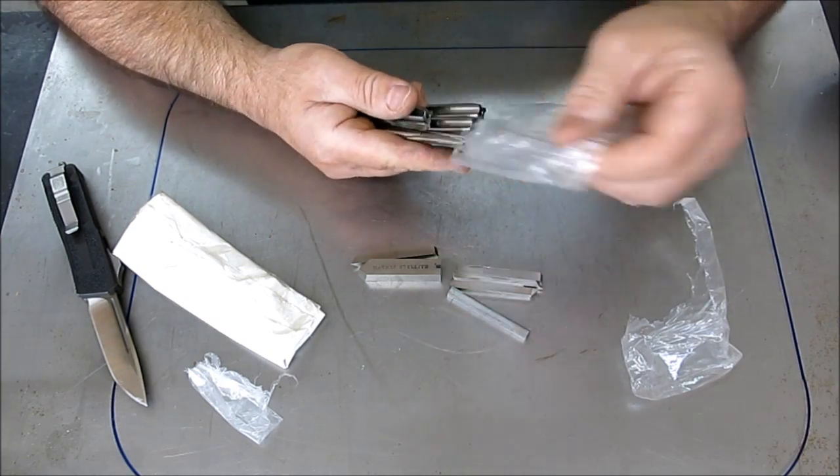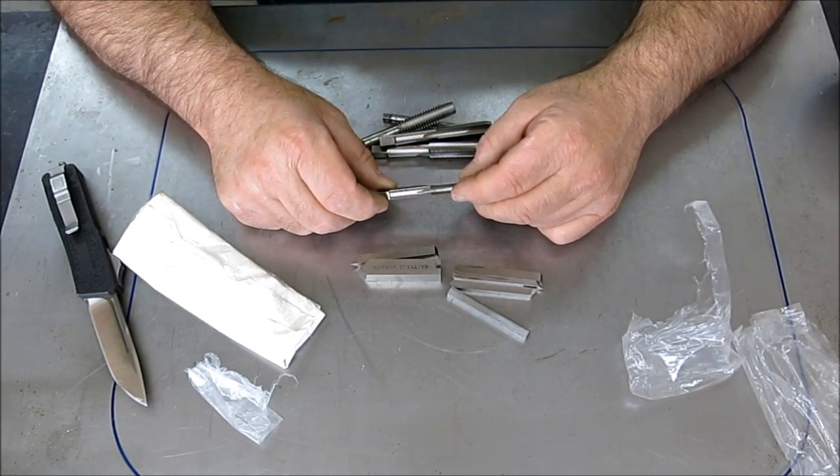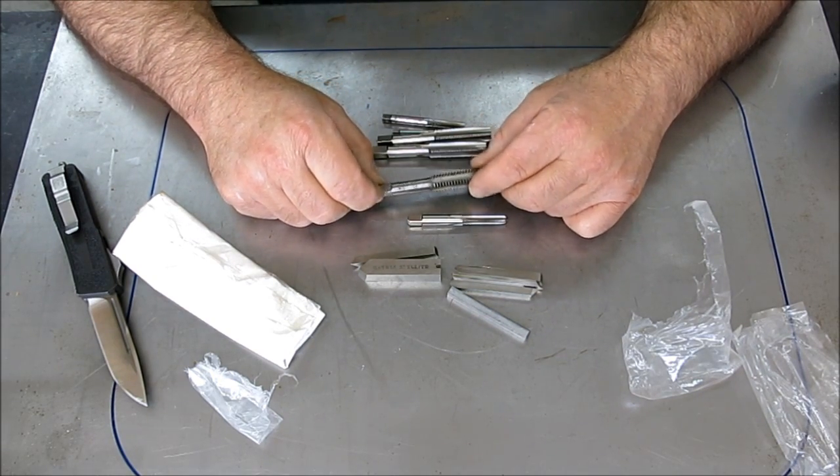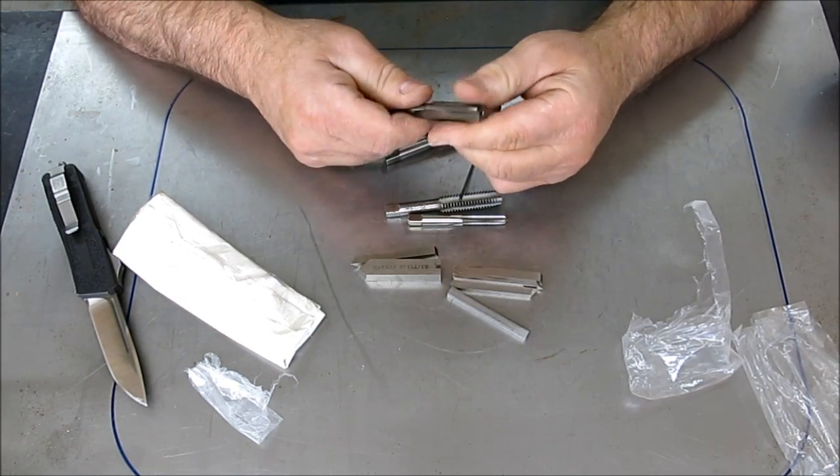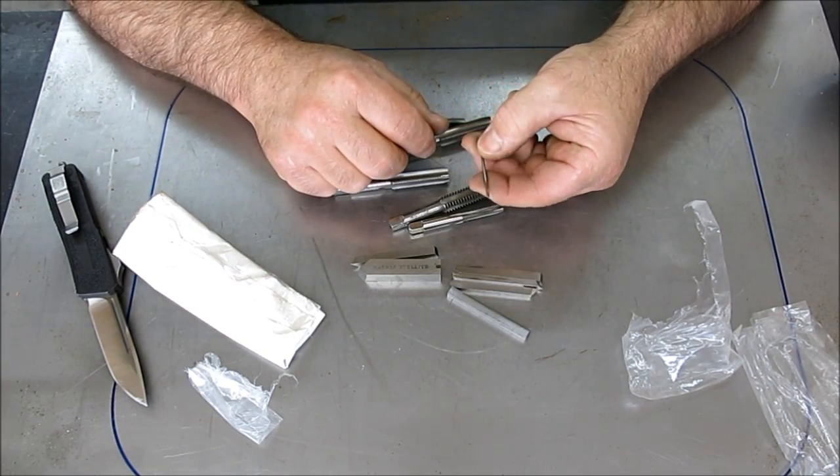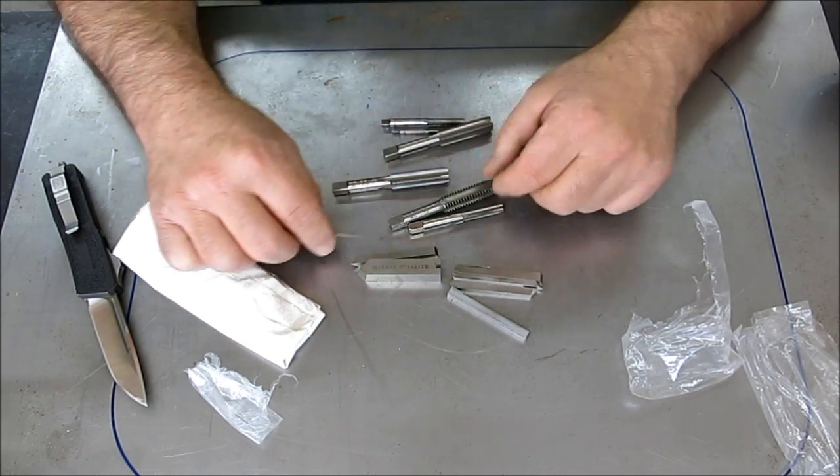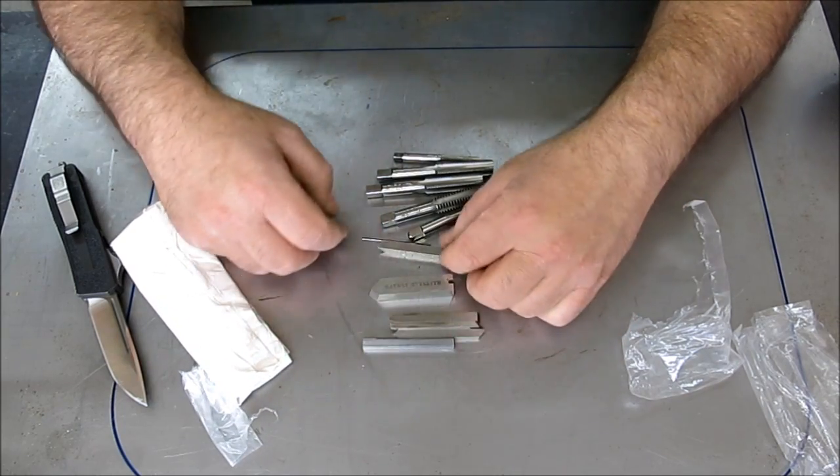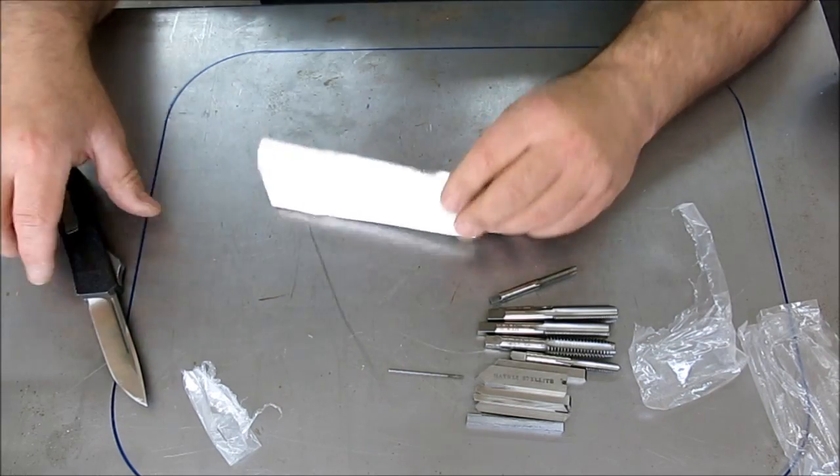And then we got some taps. Okay. So hand taps five sixteenths. That's an old one. Greenfield half twenty feels pretty good. A little dinky reamer. All right. Very good. And the good little tooling package there. Thank you very much, Fred.